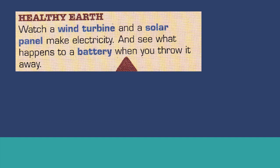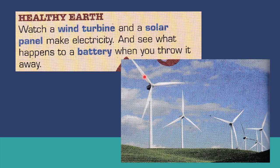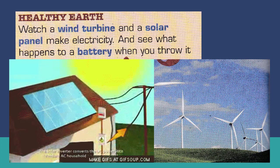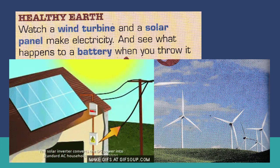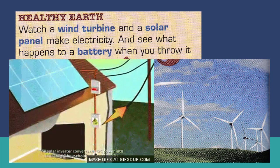Then we have 'Healthy Earth.' Watch a wind turbine and a solar panel make electricity, and see what happens to a battery when you throw it away. This is a wind turbine — kincir angin in Malay. And we have a solar panel. These two things make electricity from natural resources — sumber semula jadi.